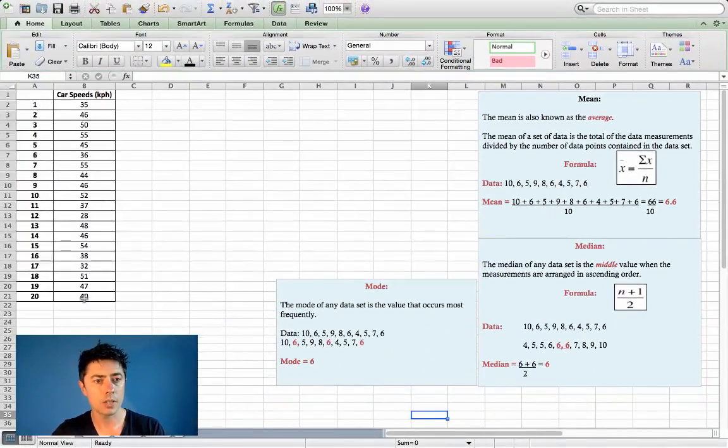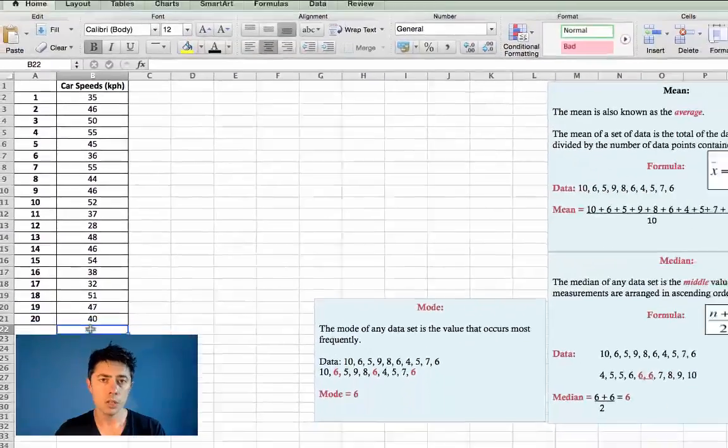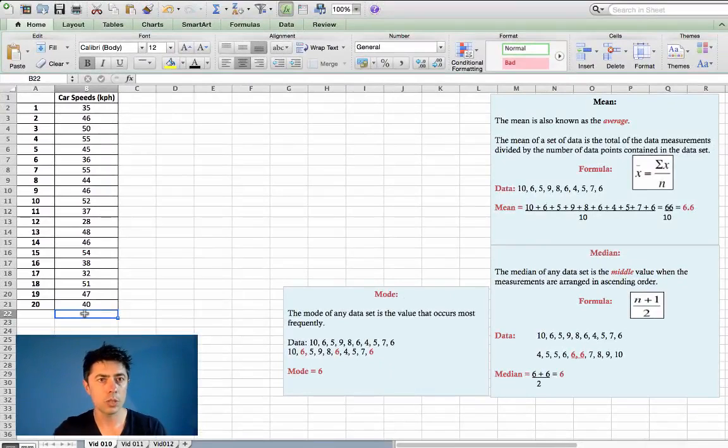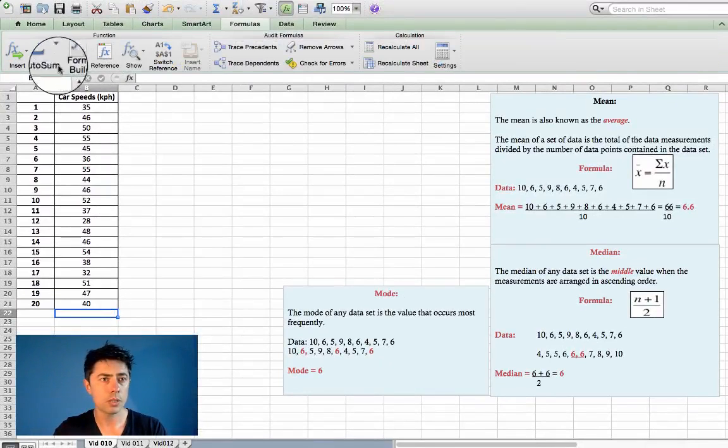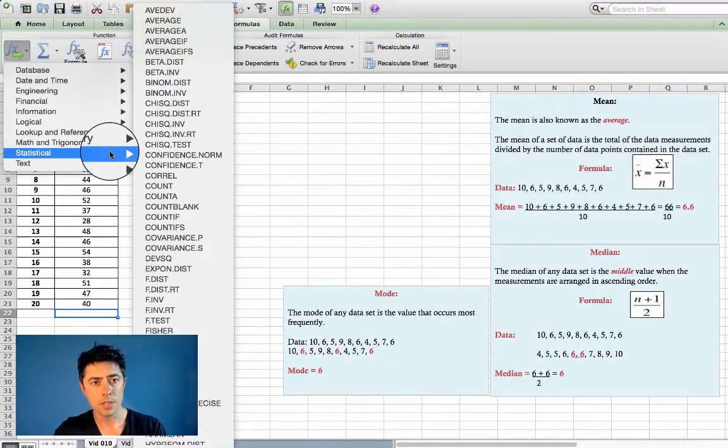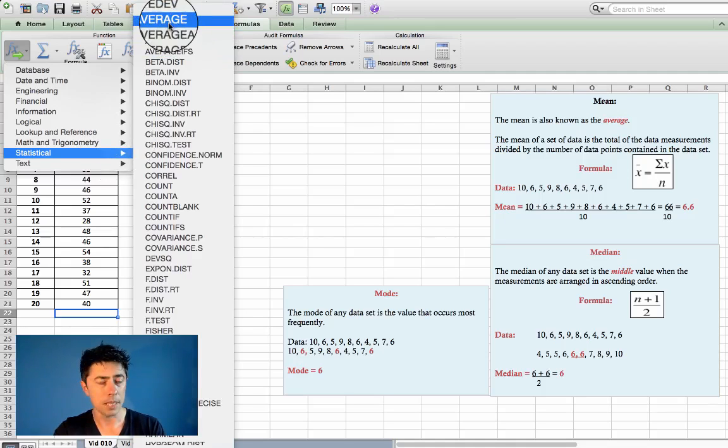So let's take a look at our example here, our data set for cars. Rather than doing this manually, Excel will allow us to do this with a function. So we'll go into formulas, insert, statistical function, and look for average, not mean.